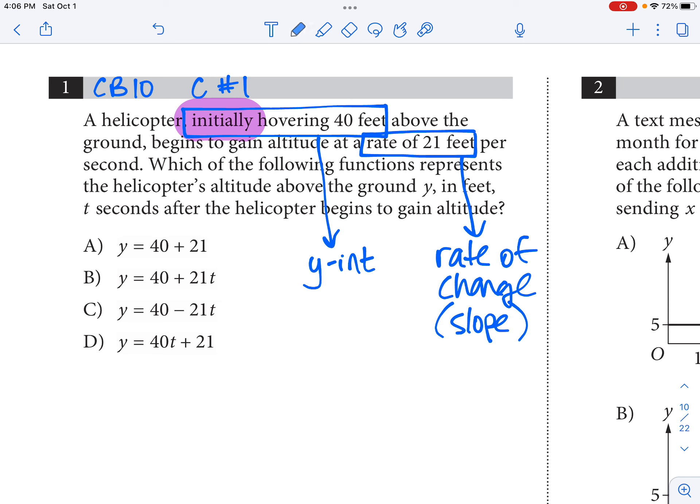And so if we're going to put this together, y equals mx plus b style, you remember that your slope is the rate of change, the m. And so that goes in for the m. And the y-intercept is the 40. So we have a starting height of 40 feet and we're going up 21 feet per second.